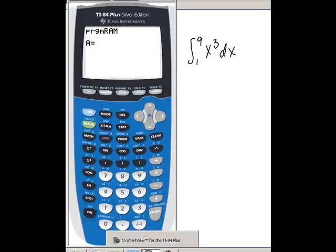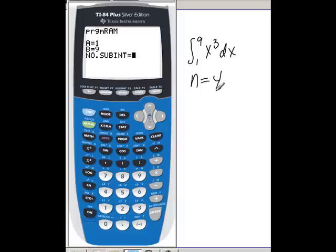Press enter to run the program. The calculator is going to ask you to input the left endpoint or the lower bound, the right endpoint or the upper bound, and the number of subintervals. Let's do n equals 4, so we'll type in a 4 and press enter.